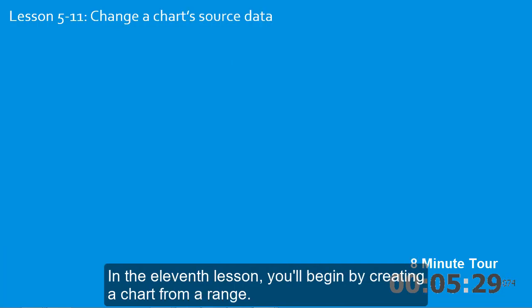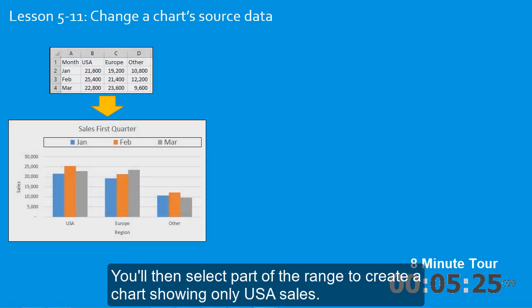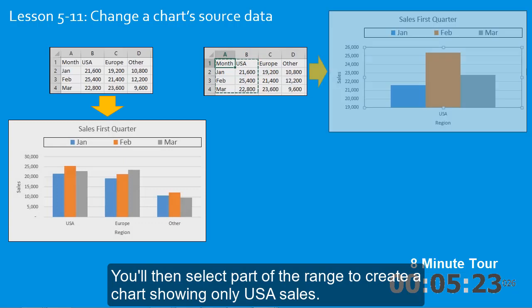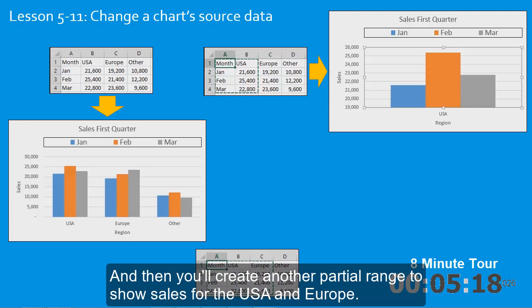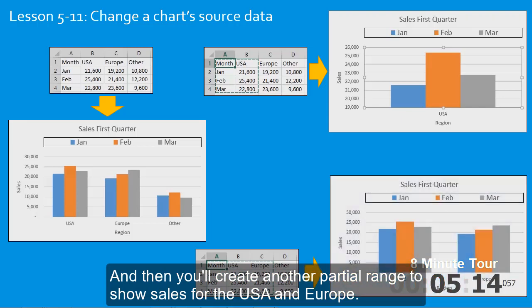In the eleventh lesson you'll begin by creating a chart from a range. You'll then select part of the range to create a chart showing only USA sales. And then you'll create another partial range to show sales for the USA and Europe.